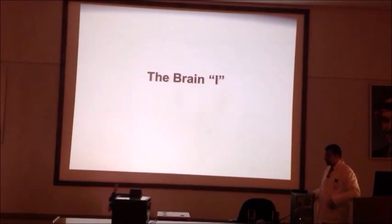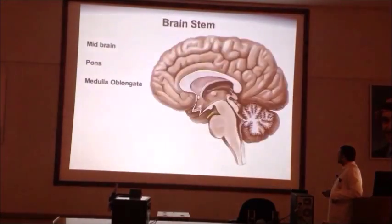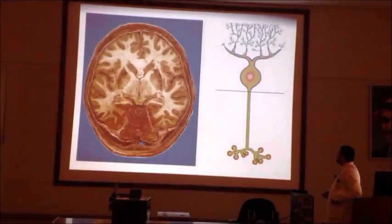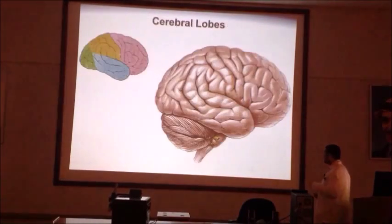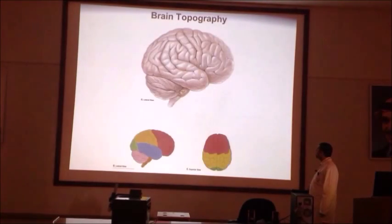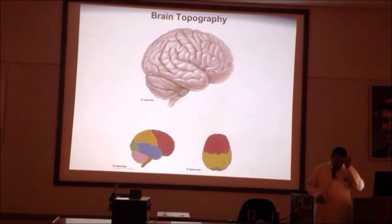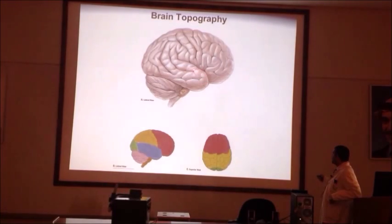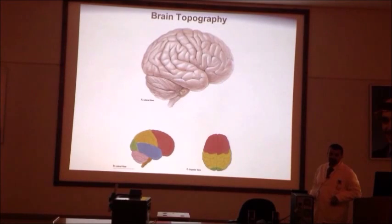In the previous lecture, we started speaking about the brain, the first part of the central nervous system. The brain is divided into three main components: the forebrain, which includes the cerebrum and the diencephalon; the midbrain; and the hindbrain, which is composed of pons, medulla, and cerebellum. We started speaking about the cerebrum, which is divided into four lobes by sulci: the frontal lobe, separated from the parietal lobe by the central sulcus; the temporal lobe, separated from both frontal and parietal by the lateral sulcus; and the occipital lobe, separated from the parietal by the parieto-occipital sulcus.